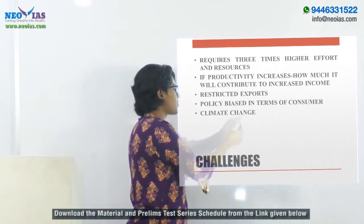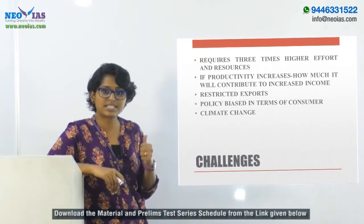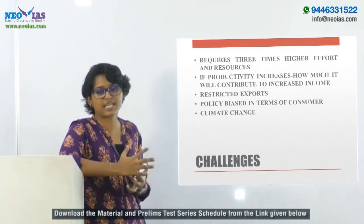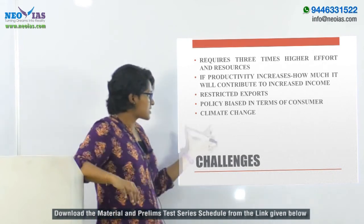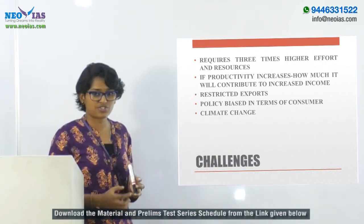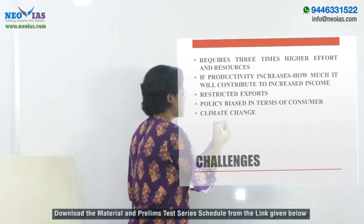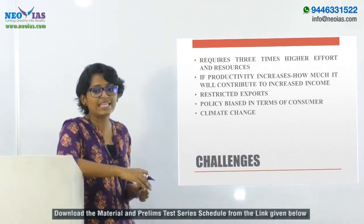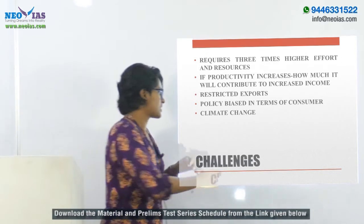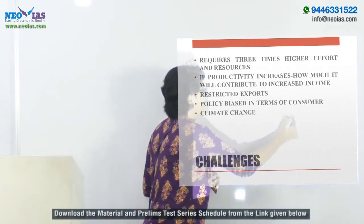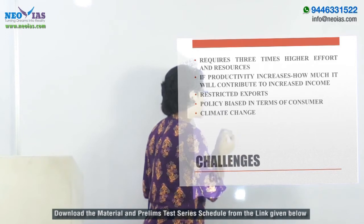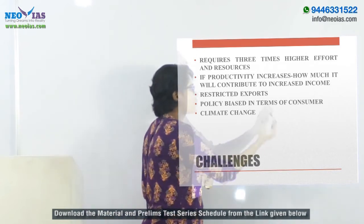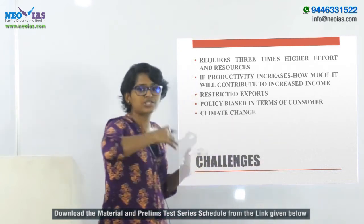Another major problem is climate change - it is a great threat to agriculture sector. Data from the network program on climate change says that climate change can decline agriculture production or productivity from around 4.5 to 9% of the present level in the medium term, that is from 2010 to 2039. Beyond 2040, it can lead to a 25% reduction in productivity. This means it can hit our GDP growth by 2% per annum.